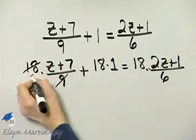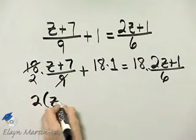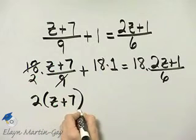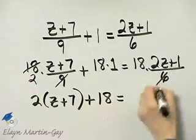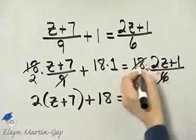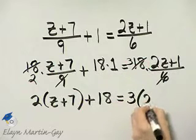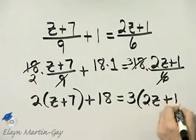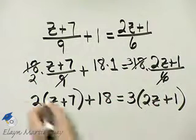9 divides into 18 two times so I have 2 times parenthesis z plus 7 plus 18 times 1 is 18 is equal to 6 divides into 18 three times and I have 3 times parenthesis 2z plus 1. Makes it a much nicer looking equation.